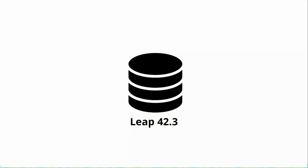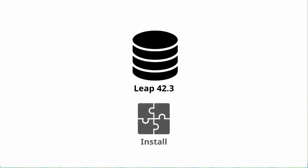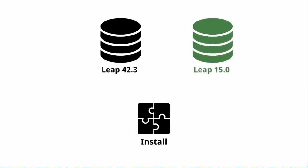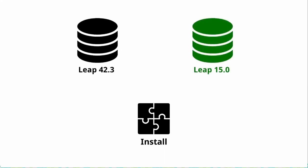Before talking about Tumbleweed Snapshots, it is helpful to first compare the differences between Leap, a fixed release, and Tumbleweed, a rolling release. Leap is released as a frozen set of packages in a repository. Those packages receive updates via another repository, but the main system remains unchanged. A user has a copy of the packages installed on their machine. Along comes a new version of Leap, which updates the base system and lots of packages, and the user may then perform a distribution upgrade to the new version.